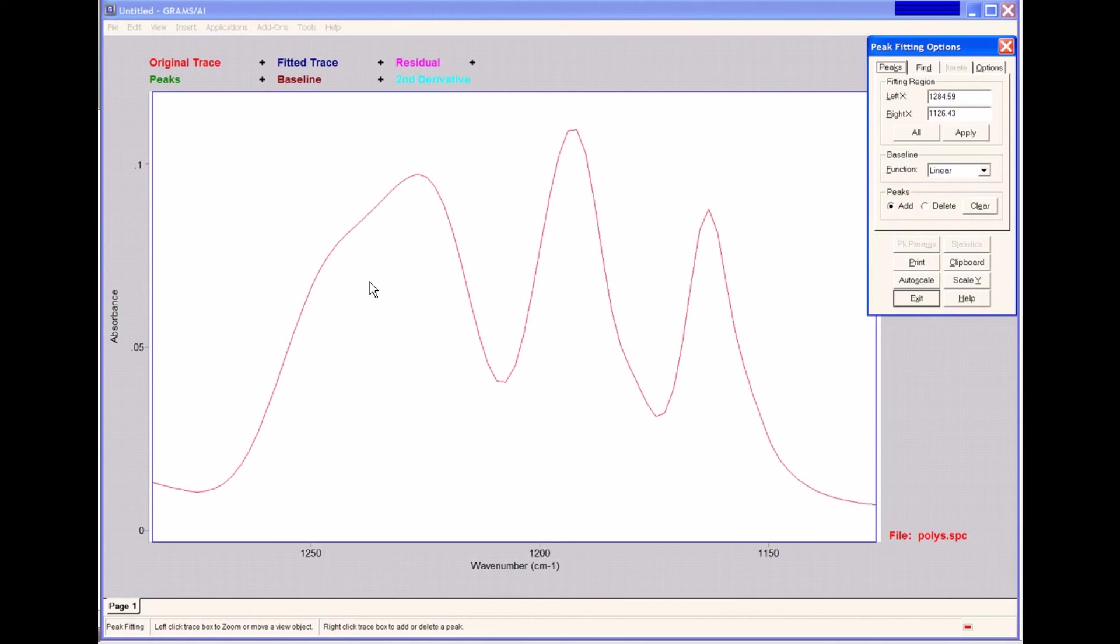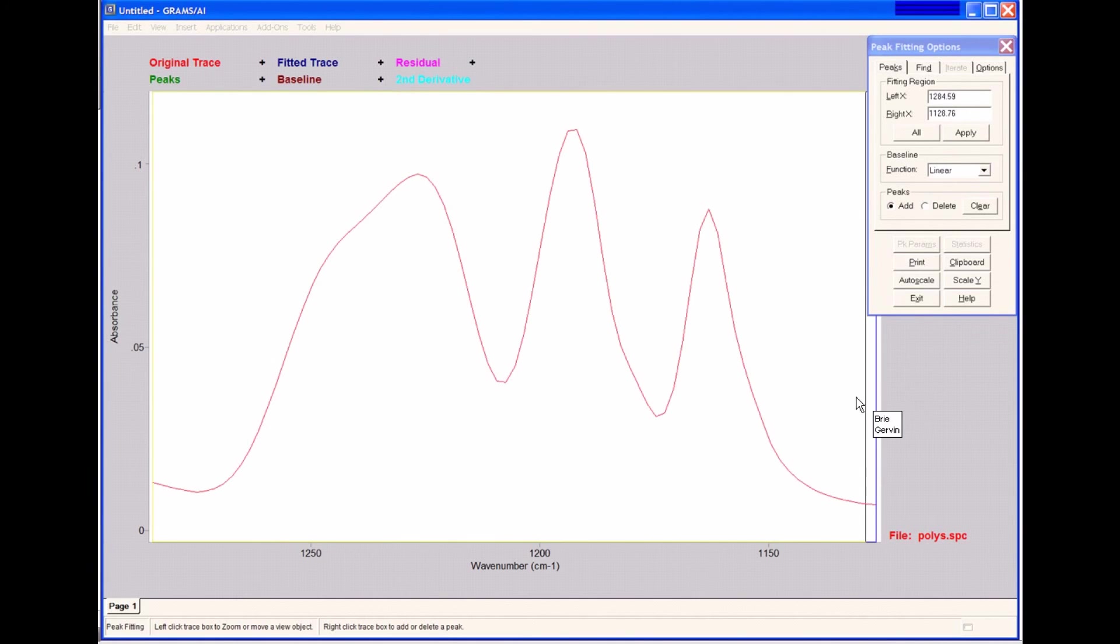As you can see, we've maintained the zoom that we had in Grams AI. Initially, peak fitting shows our original spectrum, which we see here in red, and is bounded by two blue lines. Those blue lines show us the edge of the fit. We can move those lines by clicking on them and dragging them left to right to adjust the edges of our fitting region. We'll see a legend on top here that will show us our results when the fit has been completed. The original trace is in red that we see here. We can also see the name of our original trace down here at the right.